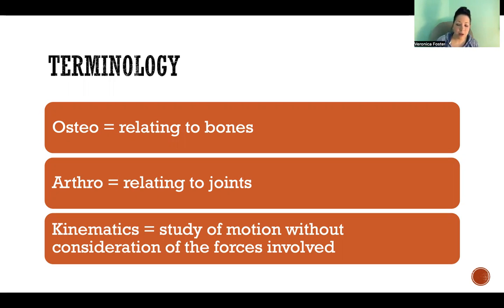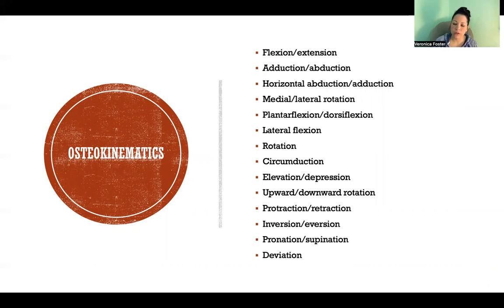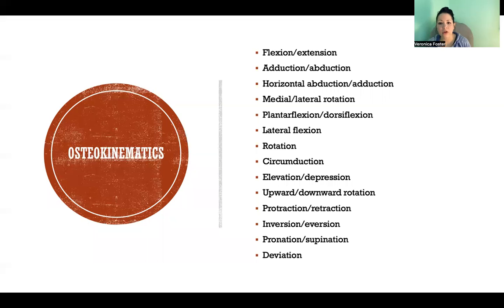So osteokinematics is the study of motion of the bones, versus arthrokinematics, which is the study of motion of the joints. With osteokinematics, if we're looking at the pathways of moving bones, the motions include flexion-extension, adduction-abduction, lateral flexion, circumduction — this whole list of movements we commonly refer to as joint actions. We're looking at the whole pathway of the moving bone, whether that be linear motion or angular motion.